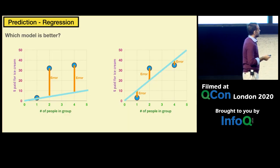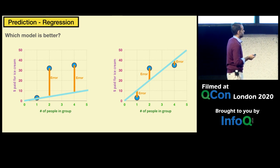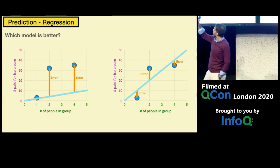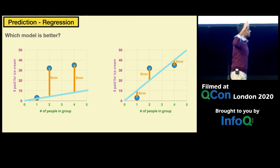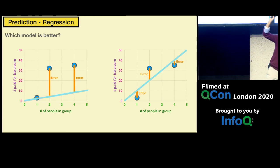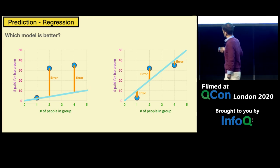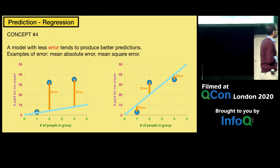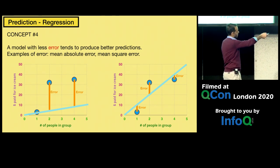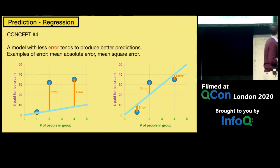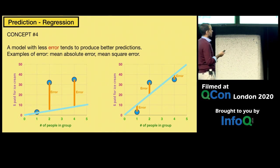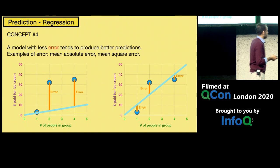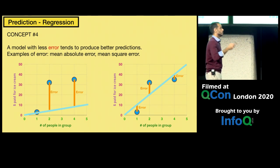We have two example models — each line is a model. The one with less error is better. That's concept number four: a model with less error tends to produce better predictions. The lengths of the errors — or their average — is called mean absolute error. More commonly you'll find mean squared error: we square the errors, average them, and that's the error value we try to minimize in the training process.